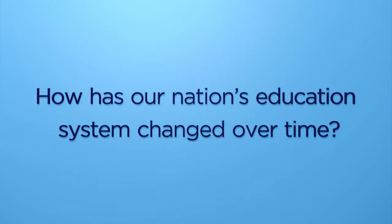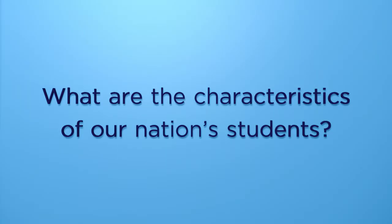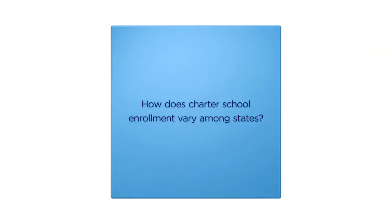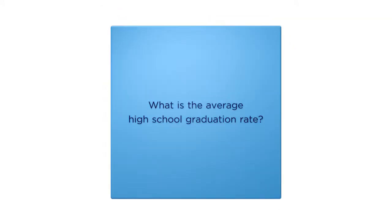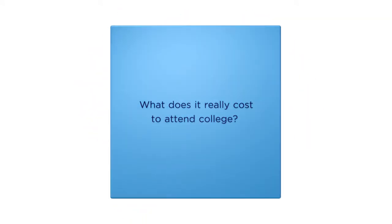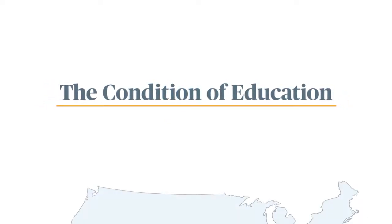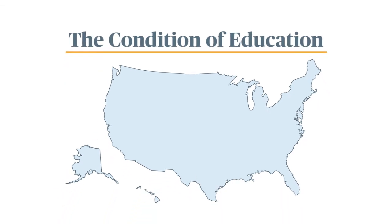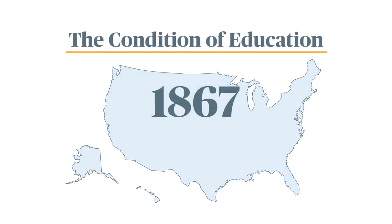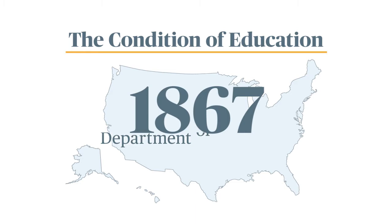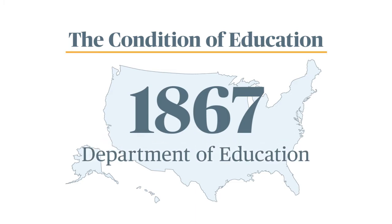How has our nation's education system changed over time? What are the characteristics of our nation's students? The answer to these and other important questions are available in our annual report, The Condition of Education. This report provides a comprehensive look at the status of education in the United States. Its origins date back to 1867 and the creation of the first Federal Department of Education.